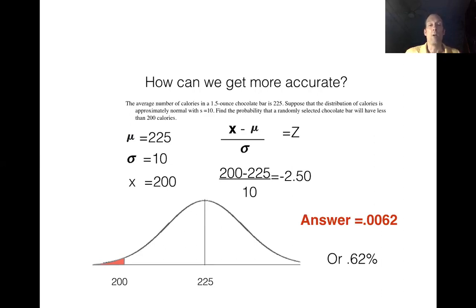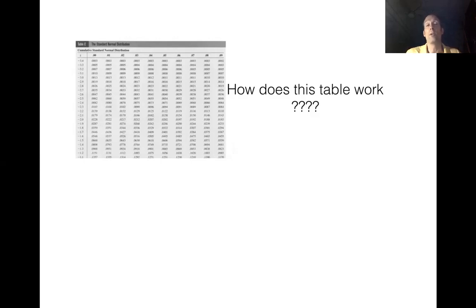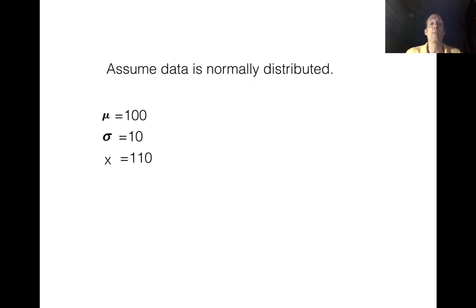The most common question students have is: how did the z table work? Where did all those four-digit probabilities come from? The answer has to do with z scores — it all comes back to how many standard deviations our x value is above or below the mean. Let's take a simplified scenario with just three things: an average, a standard deviation, and an x value — where the data is normally distributed.